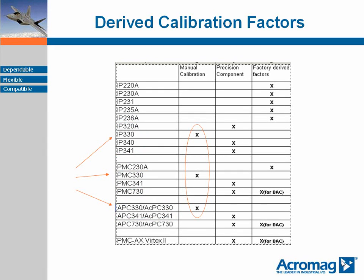The 330 series, which is available in four form factors, is calibrated in the factory by hand by adjusting the pot while the board is connected to a precision reference voltage. The other analog input boards are designed with precision resistor diode networks that are very stable and are validated against a precision reference voltage during test. This extra cost is offset by a low reject rate during final test and the elimination of operator intervention.